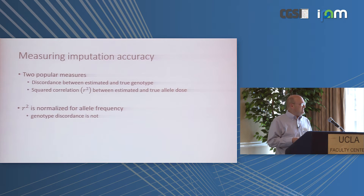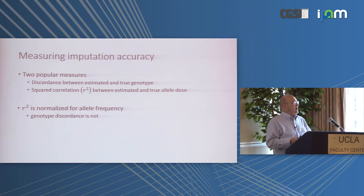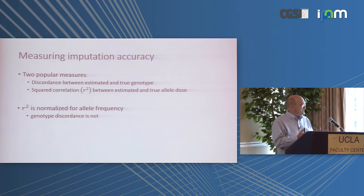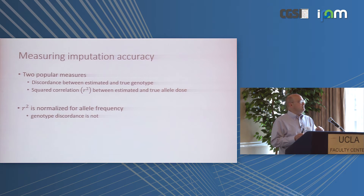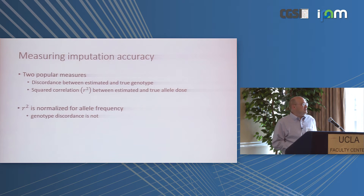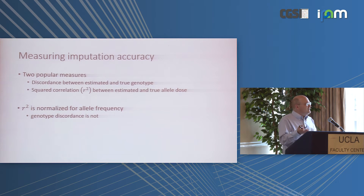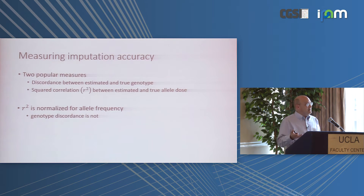R-squared has some advantages. A big advantage is it's normalized for allele frequency. If I tell you I can impute a marker with 99.9% accuracy, that's hard to interpret without knowing the allele frequency. At 30–50% frequency, 99.9% accuracy is really good. At 0.1% frequency, it's really bad — you could just always impute the major allele, destroy all information at the marker, and still achieve 99.9% accuracy. Correlation automatically builds in the allele frequency through variances in the denominator.